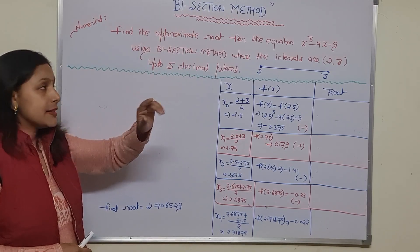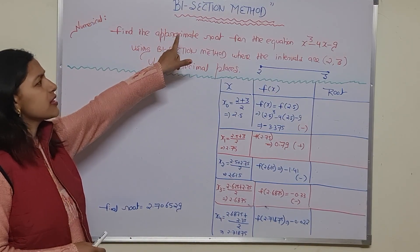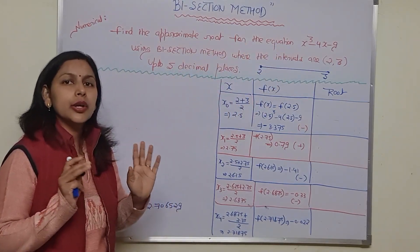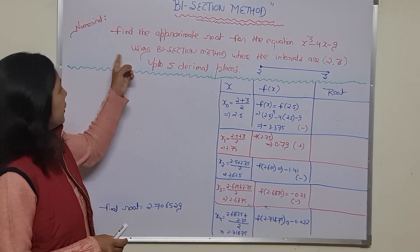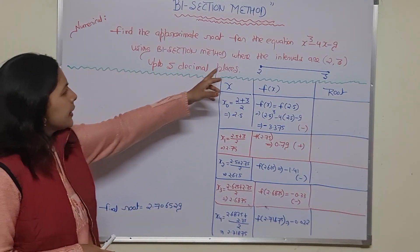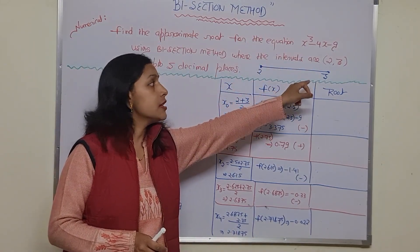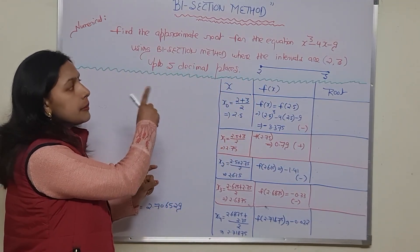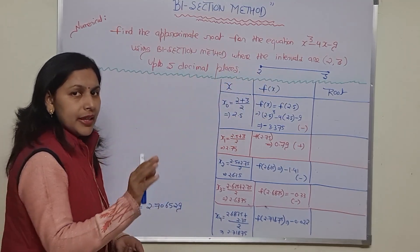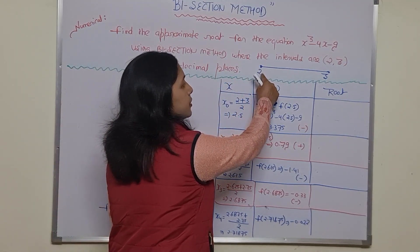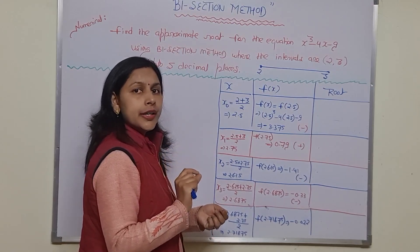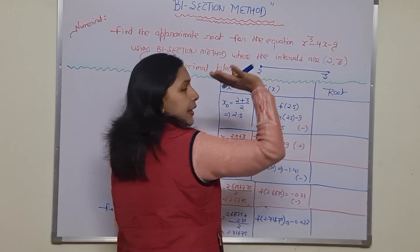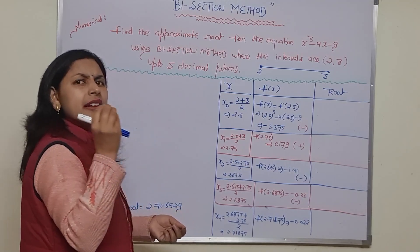Today's numerical based on the bisection method: you have to find the approximate root for the equation x³ - 4x - 9. The interval given for this equation is (2, 3), and we have to find out the approximate root between these two intervals.